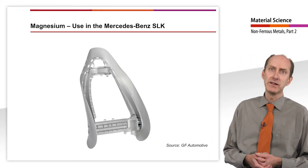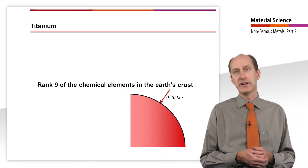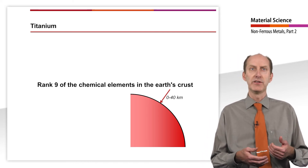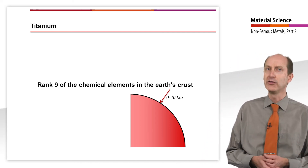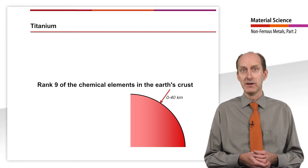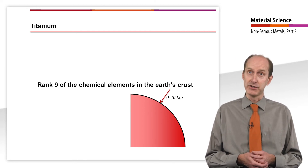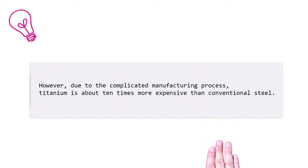The last light metal to be briefly introduced is titanium. Titanium is the ninth most common chemical element in the earth's crust, so its general availability is very large. However, due to the complicated manufacturing process, titanium is about 10 times more expensive than conventional steel.